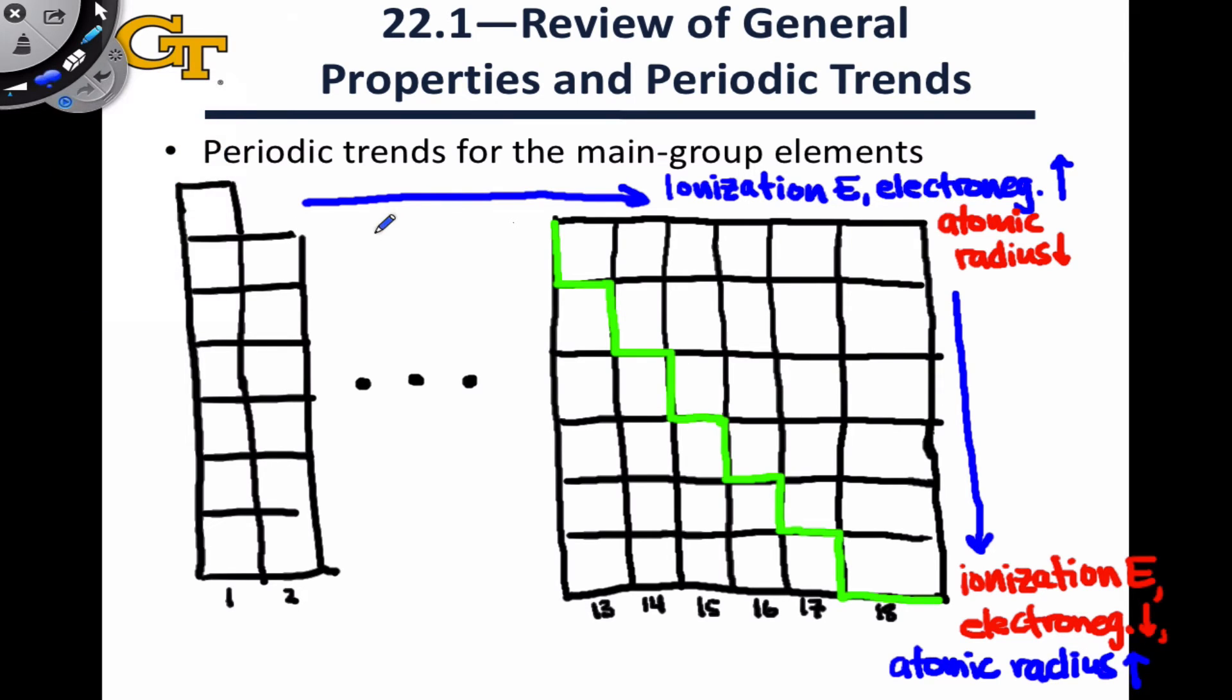One other thing worth mentioning, a key idea that we're going to come back to, is that the effective nuclear charge on the valence electrons increases as we move to the right. The increase in Z-effective, as we call it, plays a big role in explaining why ionization energy and electronegativity increase and atomic radius decreases.